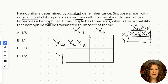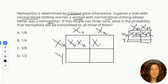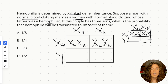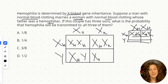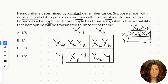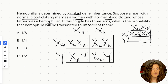Filling out this Punnett square: for daughters, one option is homozygous dominant with no chance of having the hemophilia allele, and the other daughter option is heterozygote. For the sons, one probability is normal because they'd get the normal allele from the mother, and the other probability is that they'd have hemophilia because they get the hemophilia carrier allele from their mother. We have to determine whether we're looking at all of the children, or just the sons or just the daughters.